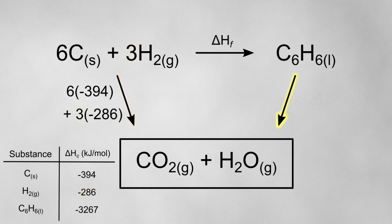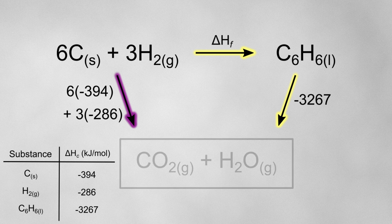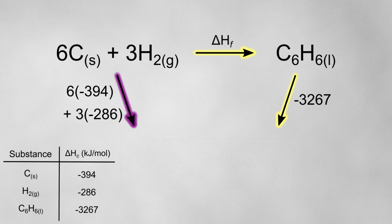On the other arrow, I just need the enthalpy of combustion for benzene. Just like before, I need to find two routes which follow the direction of the arrows. One route will go from the reactants directly down to the box, and the other route will go from the reactants to the products and then down to the box. So according to Hess's law, these two routes are equal because we're starting and ending in the same place.